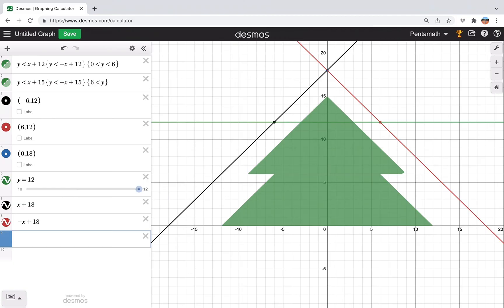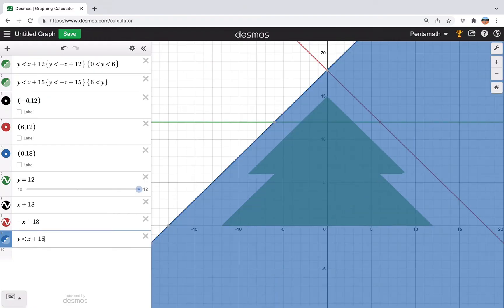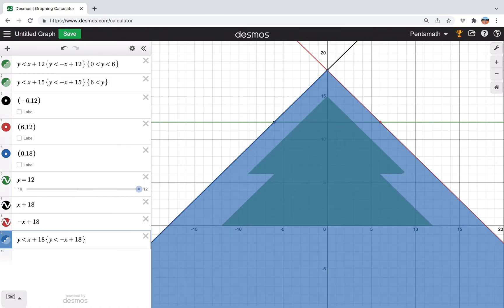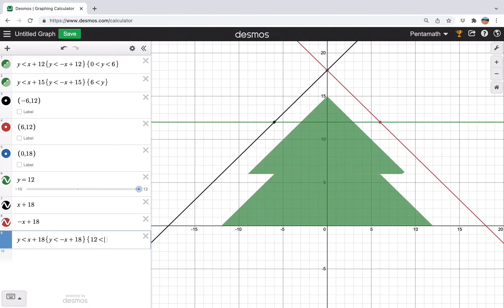And then we build the inequalities again. So y is less than x plus 18. Then y is less than negative x plus 18. And then finally we have 12 is less than y. There's our triangle there. Now we get rid of everything.